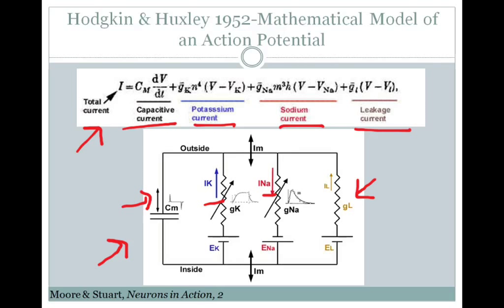The other three equations determine the factors N, M, and H over time. Those factors are multiplied by the conductance of potassium and sodium. And they stand for the relative open probabilities of the voltage-gated potassium and sodium channels over time.